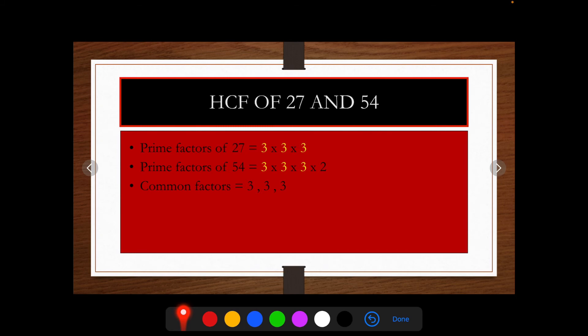Now, to find HCF, take the product of these prime factors. So, here we get 3 times 3 equals 9, 9 times 3 equals 27. So, 27 is the HCF of 27 and 54.